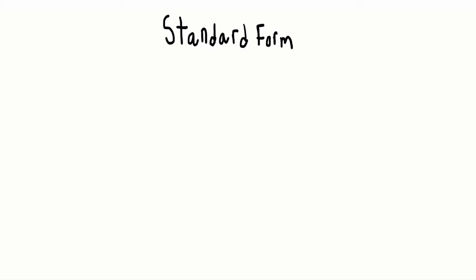In this video, we are going to be looking at the equation of a line in standard form. The equation of a line in standard form is going to be AX plus BY plus C equals 0. You can convert an equation from Y equals MX plus B, which is slope-intercept form, to AX plus BY plus C equals 0, and vice versa.